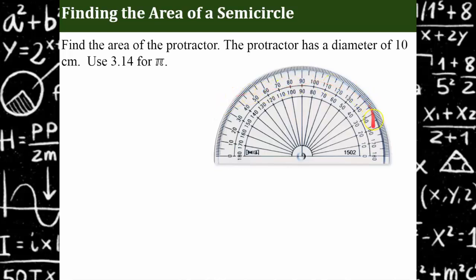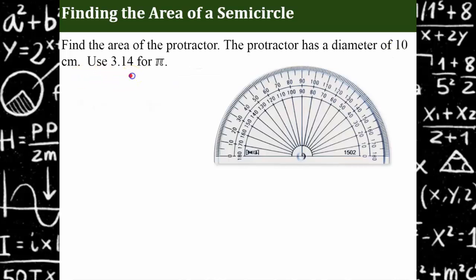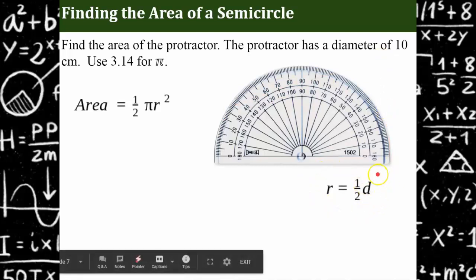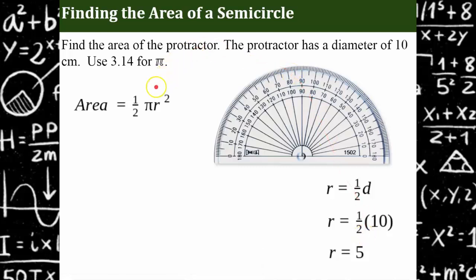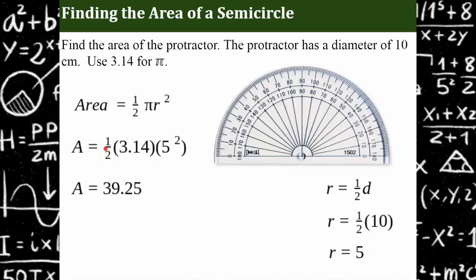Here's a real-world problem. We have a semicircle — it's a protractor. Find the area of this protractor. It has a diameter of 10 centimeters, and you're going to use 3.14 for pi. We're finding half the area of a circle. A semicircle is exactly one half of a circle. Given a diameter of 10, the radius is 5. The area formula includes one half because it's a semicircle: one half times 3.14 times 5 squared. On your calculator, 5 times 5 times 3.14, divide by 2, or multiply by 0.5. You get 39.25 square centimeters.